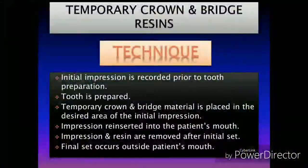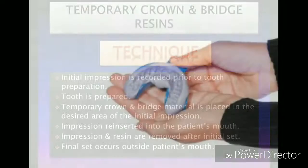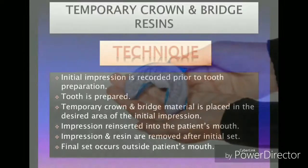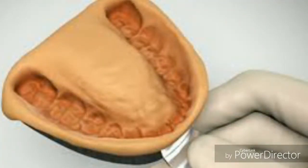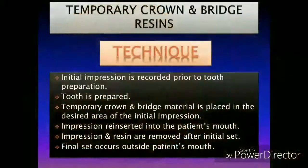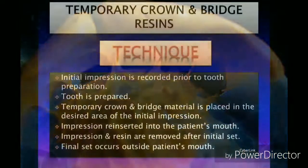Now let's briefly talk about the technique for temporary crown and bridge resin. The usual technique is to record a preliminary or initial impression with an alginate impression material prior to tooth preparation. After that, the crown cutting is performed.